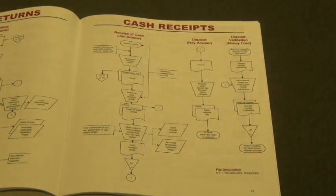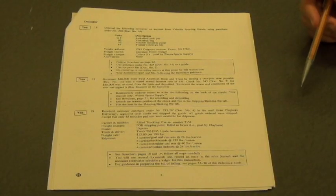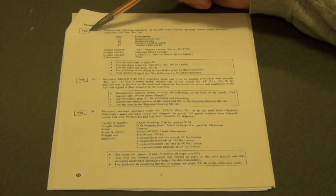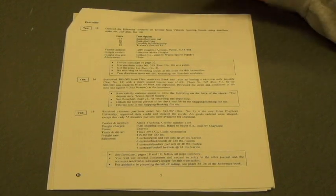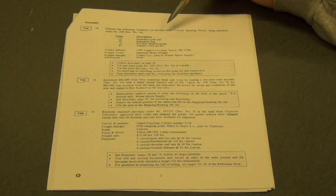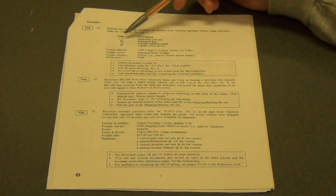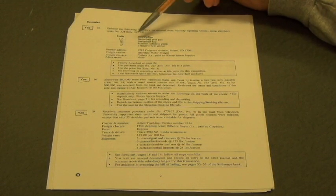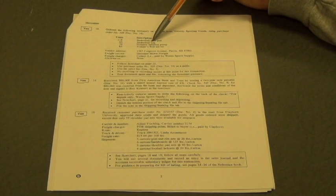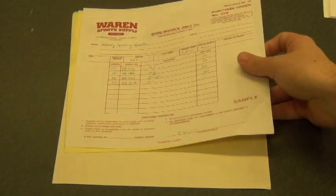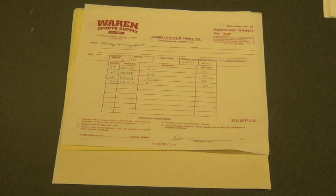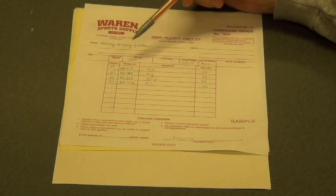That's it for the first transaction. For the second transaction, look to the left again — it says yes, you are going to modify a document. You ordered the following inventory on account from Velocity Sporting Goods using purchase order number 328, which is document number 16. These are the amounts and descriptions of what you ordered. Pull out document number 16 and write the amounts and descriptions of what you ordered.